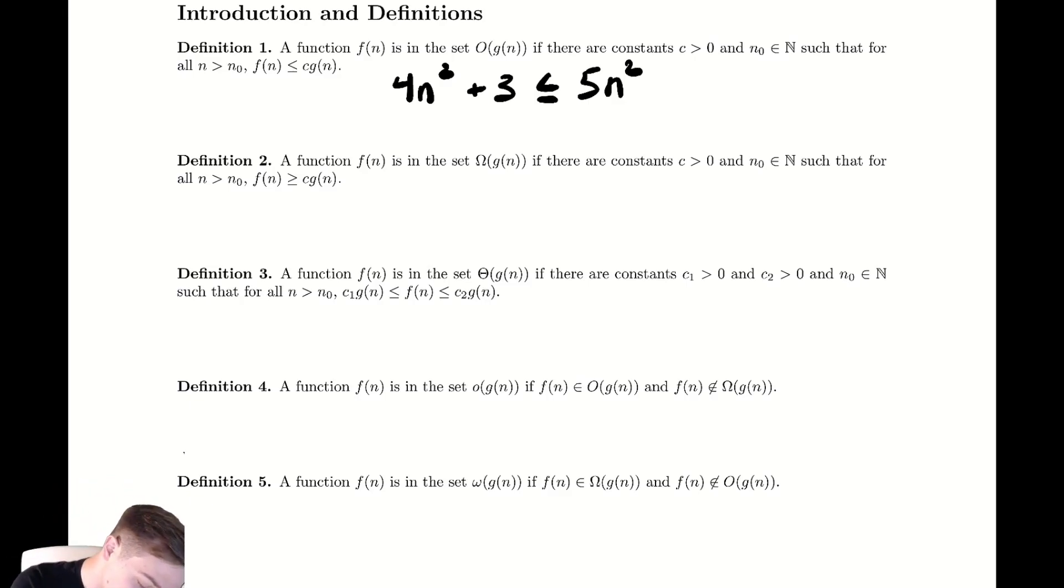So in this case maybe we would have n₀ equals 2 and our constant c would be 5. We take some uglier function 4n² + 3 and bound it by a nicer function 5n². That is our idea for big O.